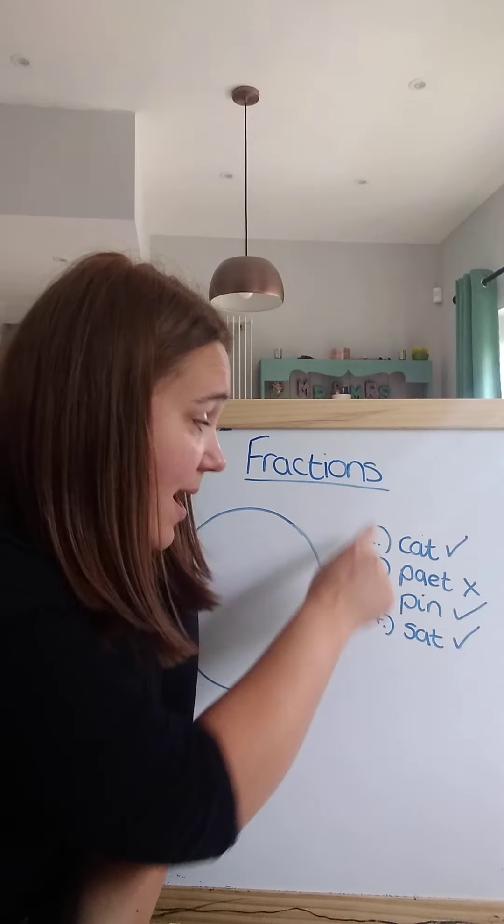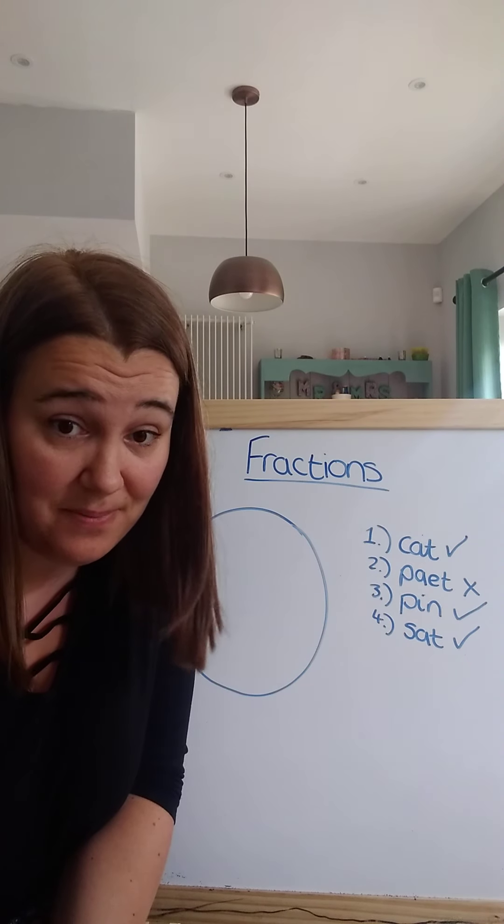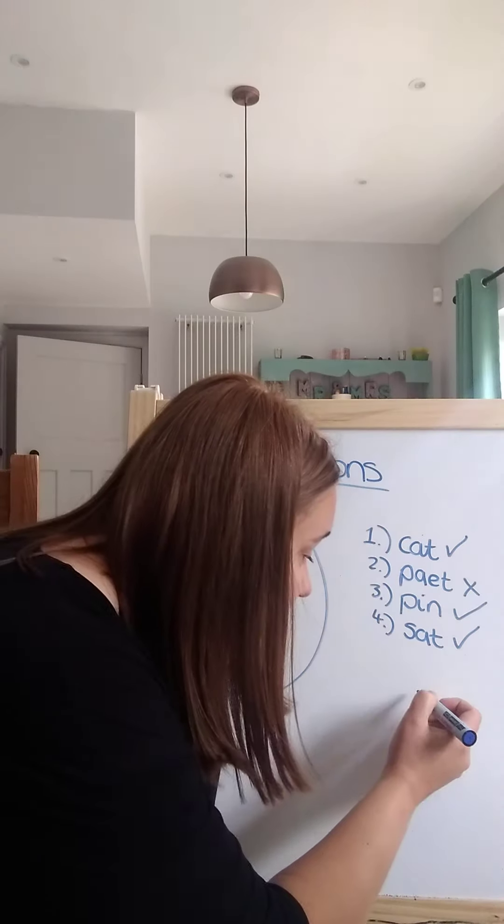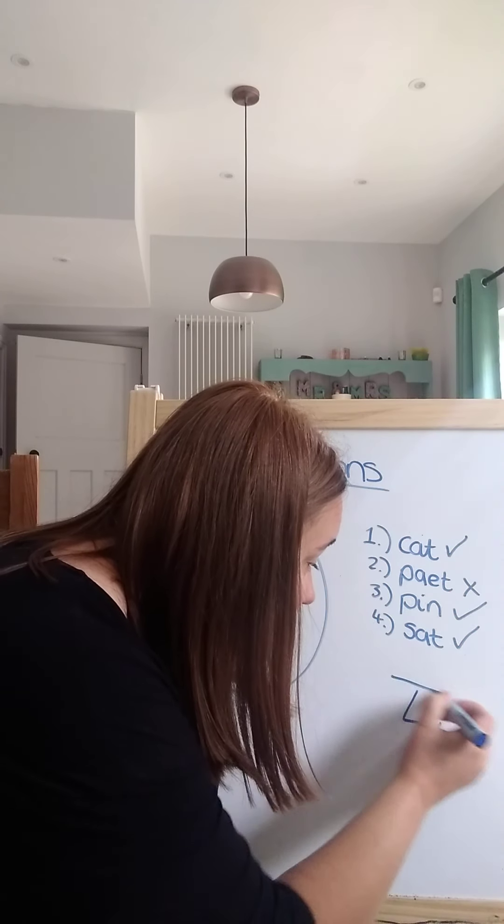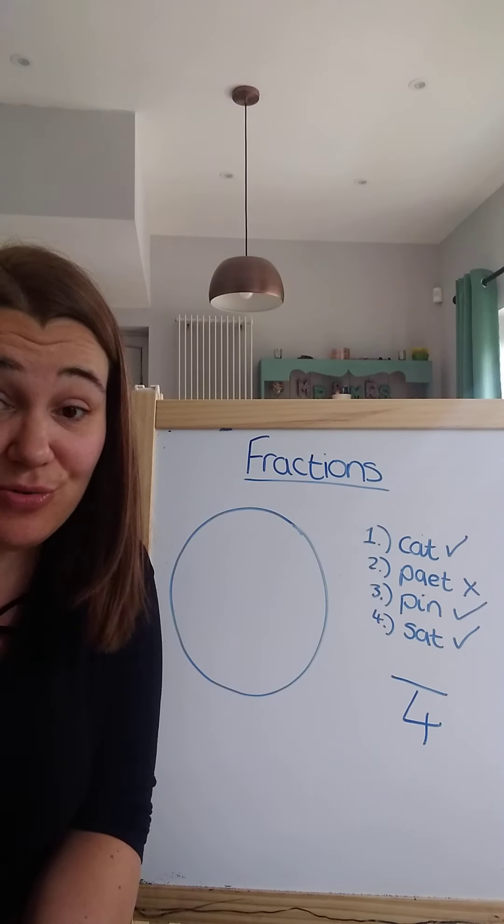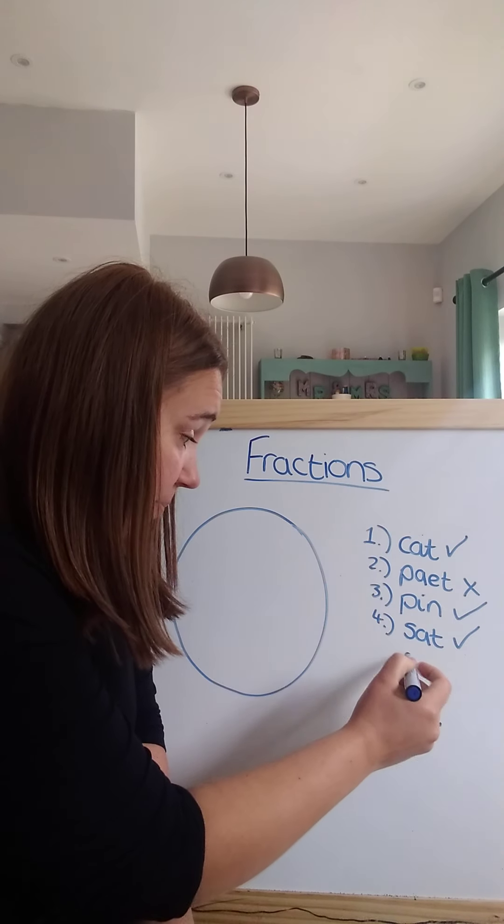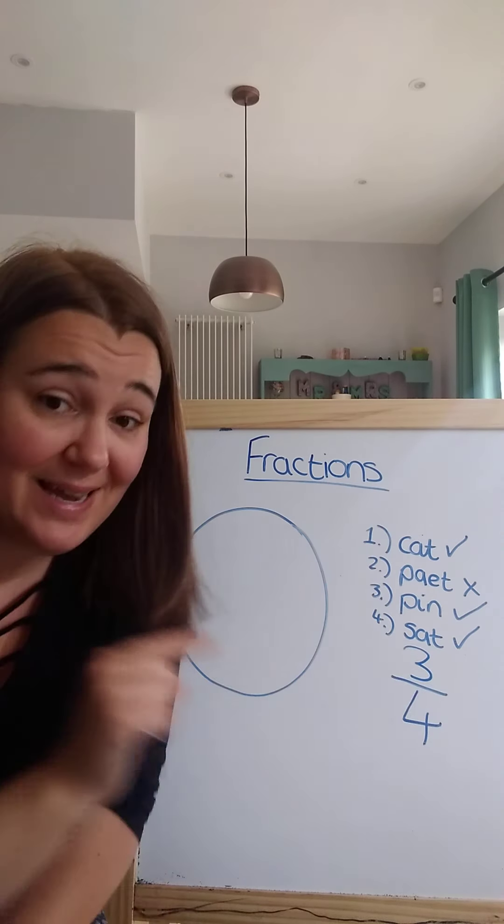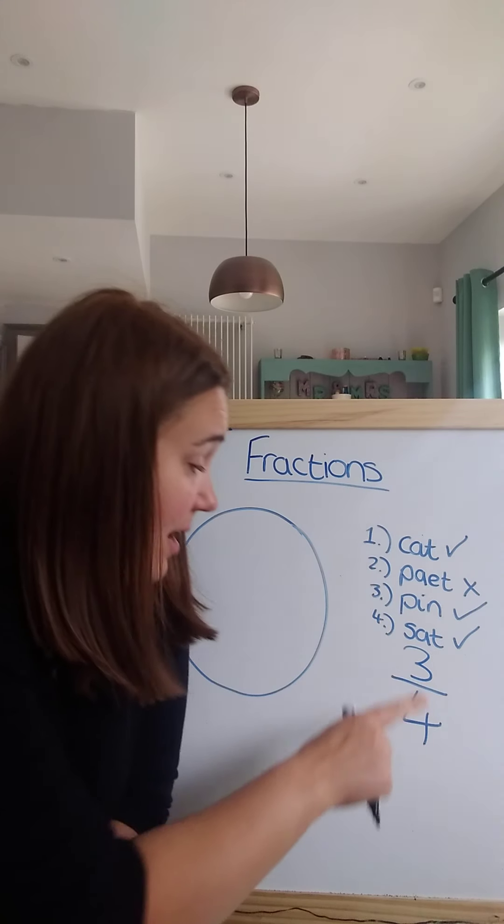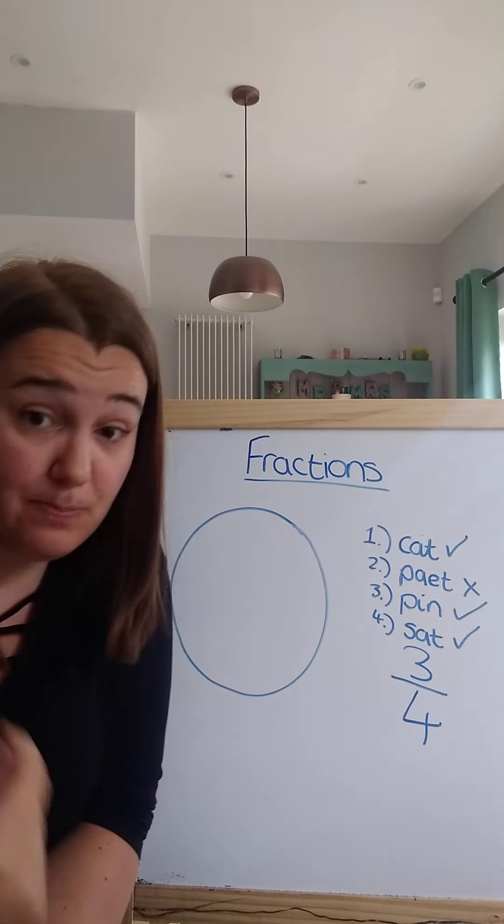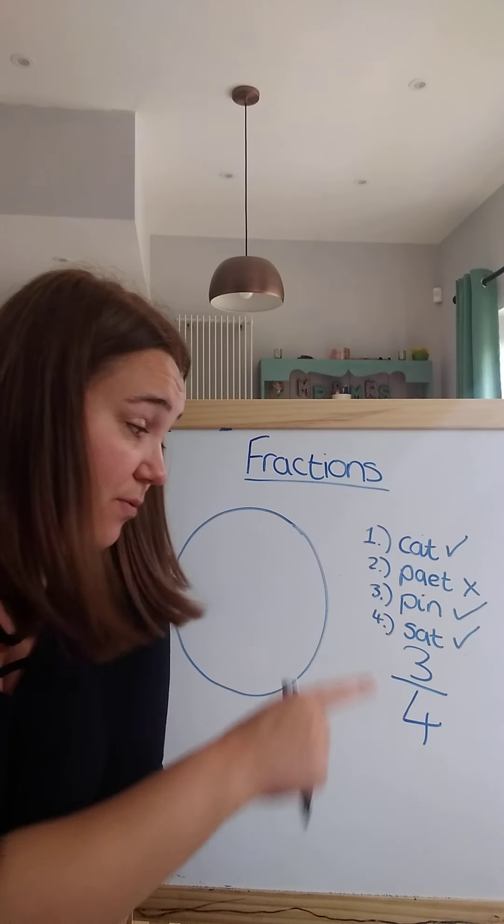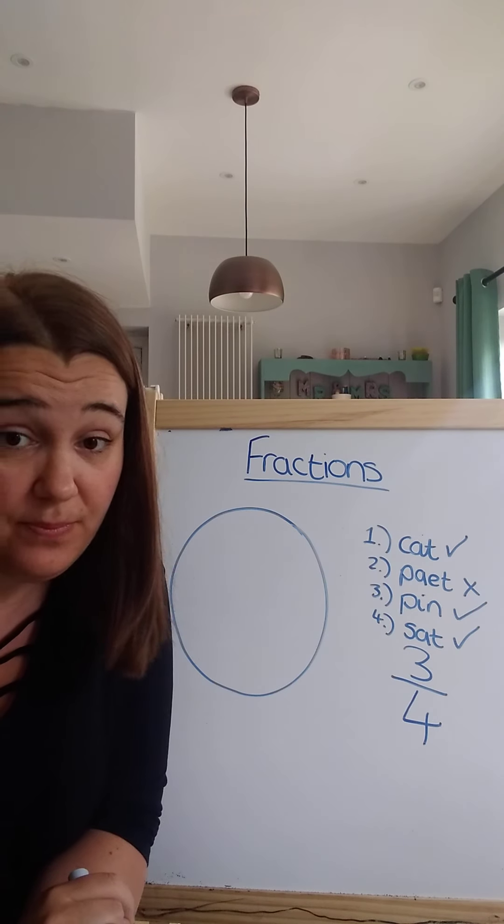Now how many spellings have I got all together? I've got four spellings all together. How many did I get correct? I got one, two, three. So we write it like this. I got three out of four spellings correct. So I've written it as a fraction.